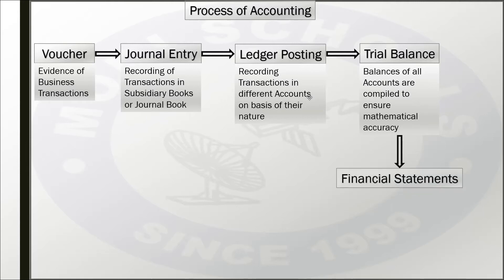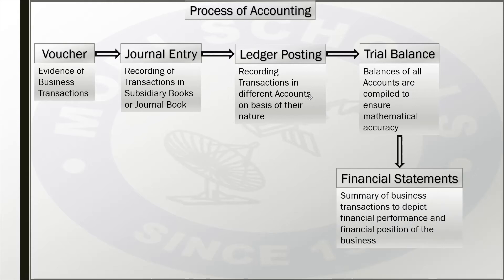The final step of accounting is financial statements. Financial statements are a summary of all the transactions a business does in a particular year. They show the profit and loss of the business and the financial position of the business — that is, how much resources and liabilities the business has. In short, financial statements depict financial performance — whether the business earned profit or loss — and the total assets and liabilities at that point in time.